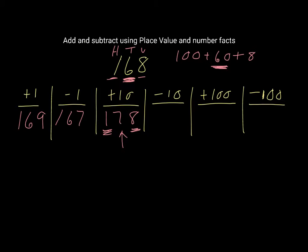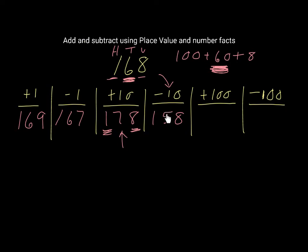So we have 168 and we're now going to subtract 10. That means we're taking away one set of 10, so 60 take away one set of 10 is going to give us 158. Make sure you recognize that the 1 is not changing because we're not changing anything in the 100s column, and we're not changing anything in the units column. The only digit we're changing is in the 10s column.